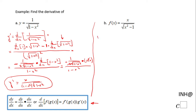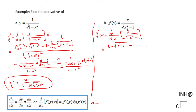Now we move to part B, which is very similar. We have a quotient and we need to find f prime of x, which is the derivative with respect to x of x over the square root of x squared minus 1. We apply the quotient rule: the derivative of x (the numerator) is 1, times the denominator square root of x squared minus 1, minus the numerator x times the derivative of the denominator — which is 1 over 2 times the square root of x squared minus 1 — times by the chain rule the derivative of x squared minus 1, which is 2x.